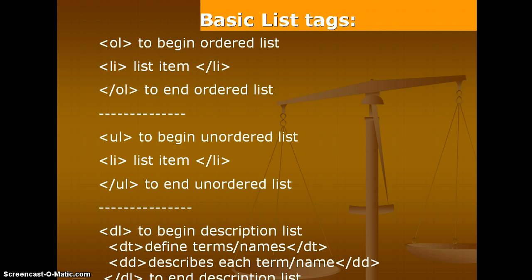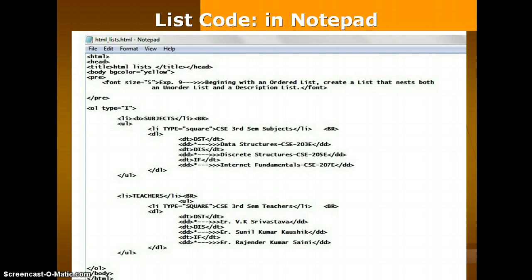To define terms or names in the description list, we use the DT tag — starting with the opening DT tag and then the closing DT tag — which defines terms or names. Then DD, which means the description of each term defined in the DT tag, and finally we end with the closing DL tag.